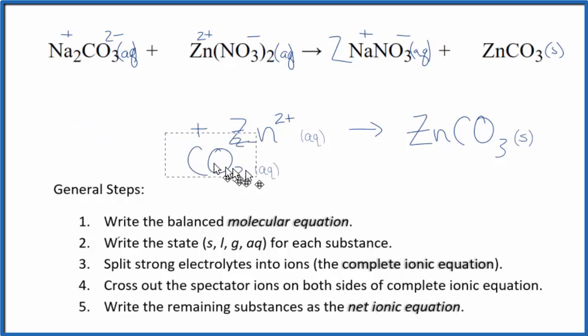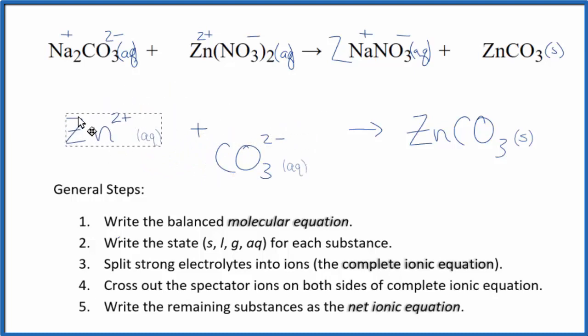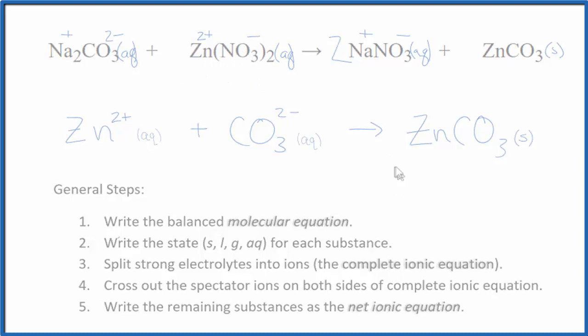Sometimes people will put the positive ion first. It doesn't really matter, but it does look a little nicer to me at least. So that's our net ionic equation for Na2CO3 plus Zn(NO3)2. This is Dr. B, and thanks for watching.